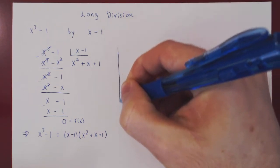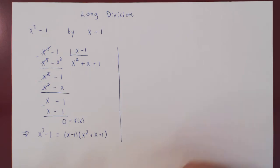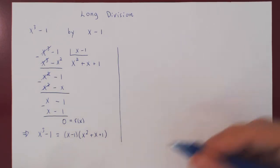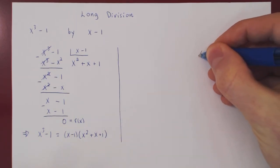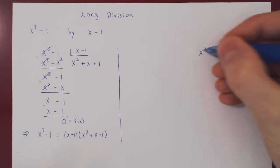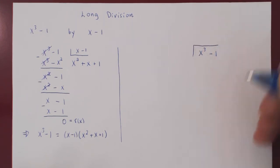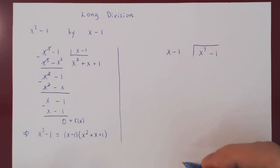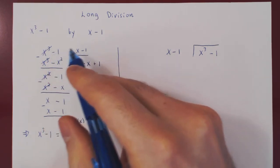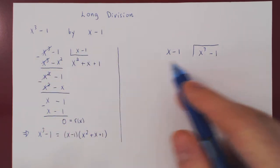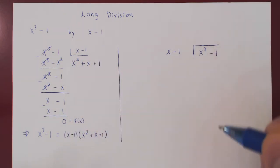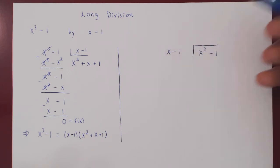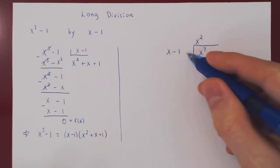Now let's see how you would have written this down if you went to an English high school. The steps are all the same except we write things in a slightly different order. We want to divide x cubed minus 1 by x minus 1, but we write the two polynomials in the opposite order. We begin: what times x is x cubed? x squared. Multiply out by x squared.